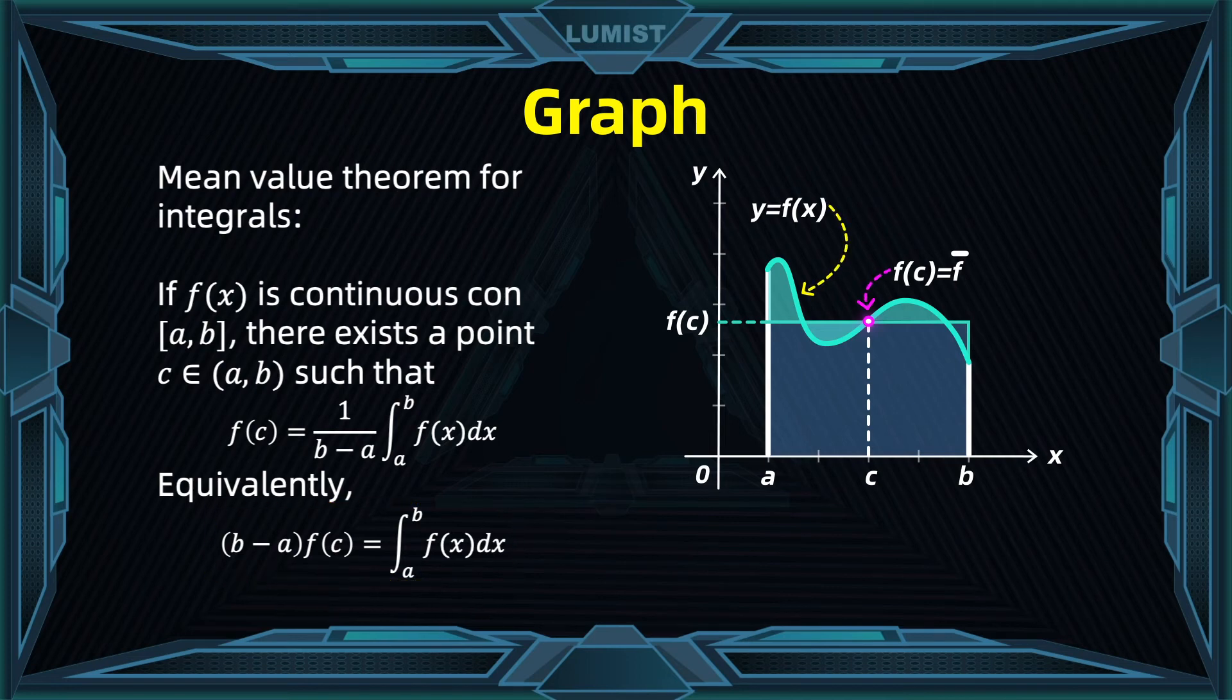The mean value theorem for integrals states that if f of x is a continuous function on the closed interval a, b, there must be one of those points c in the open interval a, b, such that the area of this rectangle coincides with the integral of the function. In other words, the area of the rectangle is the same area as the area below the graph of f. But we can state this in terms of average. The value of f at c is exactly the same average of the function on that interval.